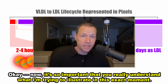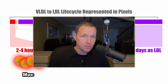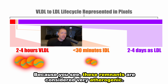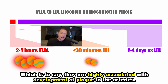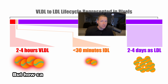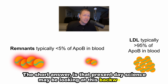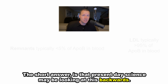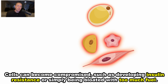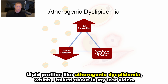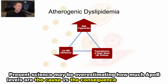Now, it's so important that you really understand what I'm trying to illustrate. Much of the key clues are right in front of us. These remnants are considered very atherogenic — highly associated with development of plaque in the arteries — much more so than LDL particles. But how can that be if they are actually much larger and if there are so few in circulation? The short answer is that present-day science may be looking at this backwards. Cells can become compromised, such as developing insulin resistance or simply being bloated with too much fuel. Thus, cells not accepting delivery of triglycerides are what create these lipid profiles — like atherogenic dyslipidemia. Present science may be overestimating how much ApoB levels are the cause versus the consequence of this situation.